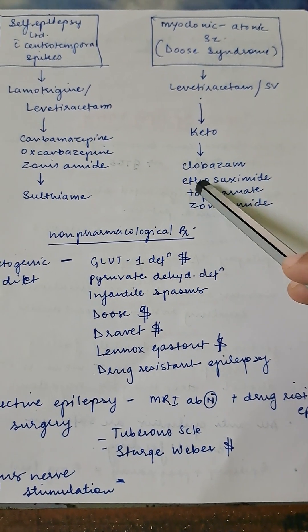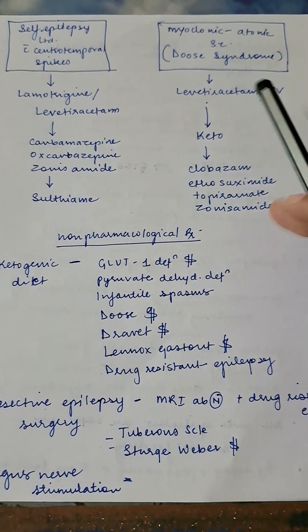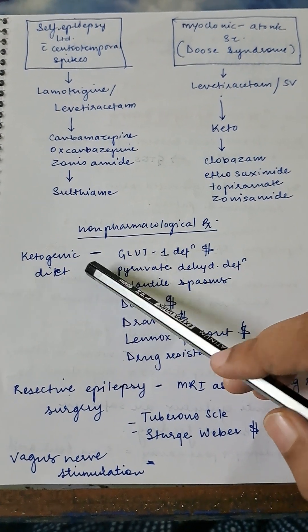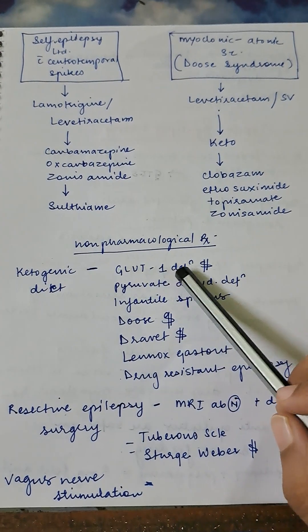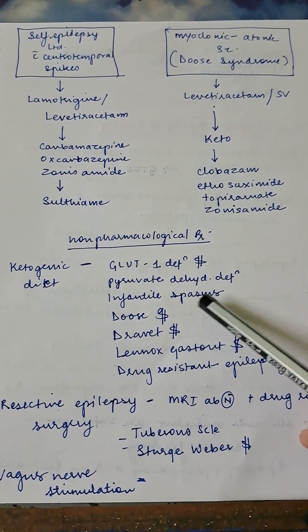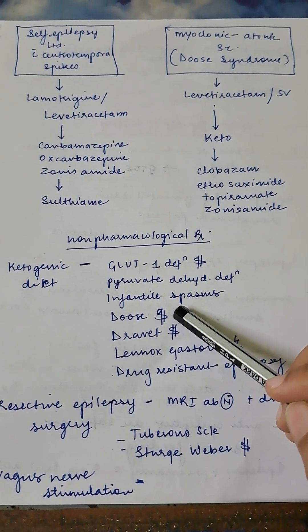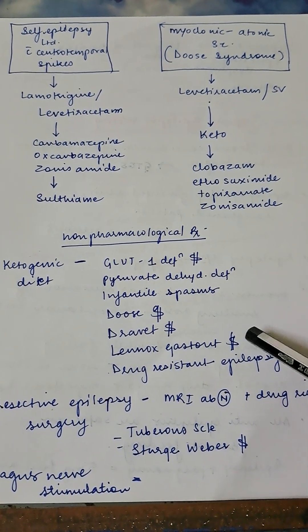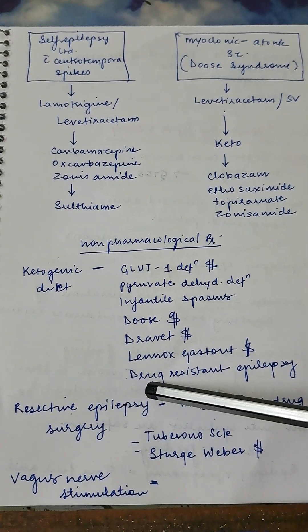Non-pharmacological treatment: ketogenic diet can be used in case of mainly infantile seizures. So GLUT1 deficiency syndrome, pyruvate dehydrogenase deficiency, infantile spasm, Doose syndrome also known as myoclonic-atonic syndrome, Dravet syndrome, Lennox-Gastaut syndrome, drug-resistant epilepsy.